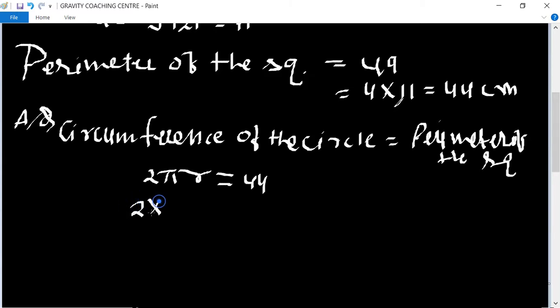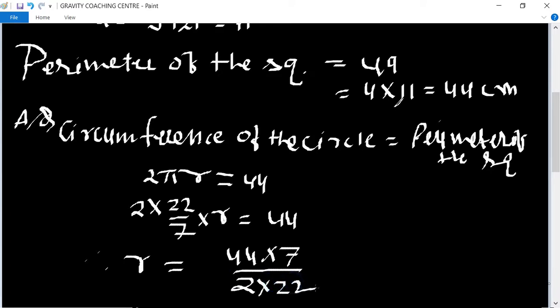2 into 22 upon 7 into r equals 44. Therefore, r equals 44 into 7 divided by 2 into 22. Cancel by 2, cancel 22 and 22, so radius is 7.